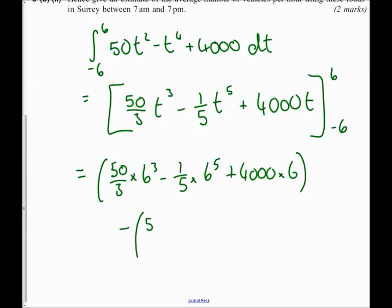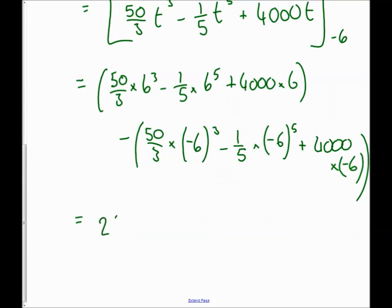And from that I'm going to take away. Now when you substitute in the minus number, I would strongly recommend using brackets everywhere. So I'm going to say -6³ - 1/5 × (-6)⁵ + 4000 × (-6). So I get 26044.8 take away -26044.8.